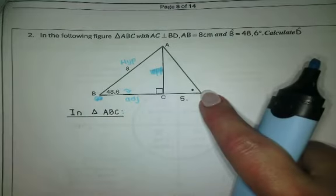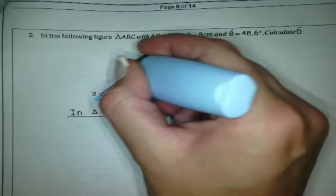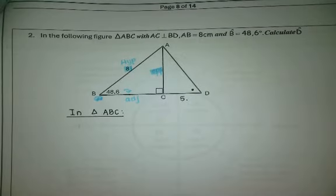And what else do they give us? Which ratio are we going to use?